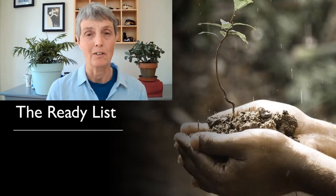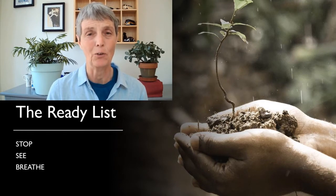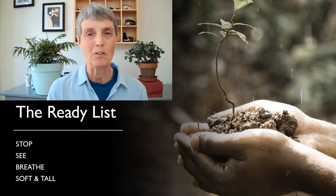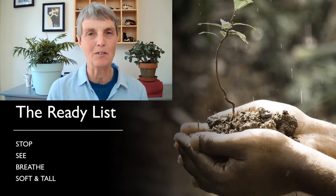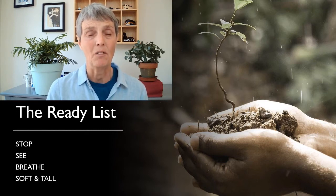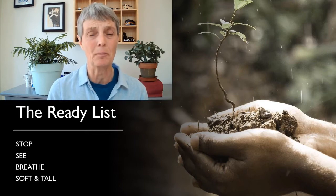The ready list is: stop, see, breathe, soft and tall. This is the version we use at Educare Small School. Everyone takes it and slightly adapts it for themselves. I believe the genesis is with Walter Carrington. I picked it up from Judith and began using it with horse riders before it occurred to me that it would be really handy to use it with the children as well. Stop, see, breathe, soft and tall.